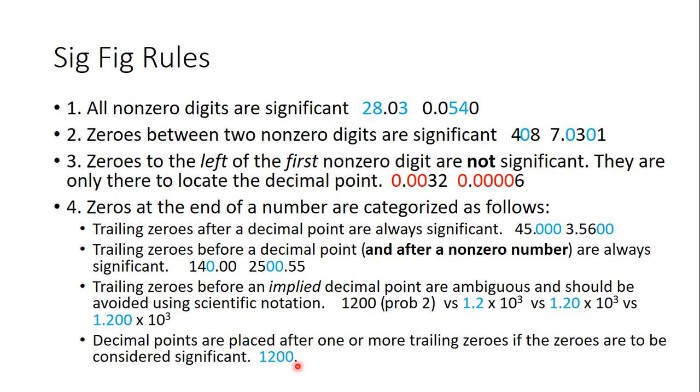Now, let's say we do have a decimal point. So now these zeros are to the left of the decimal point but to the right of a non-zero number. So these zeros now become significant. I know, a lot of rules, but this is something you have to get down.